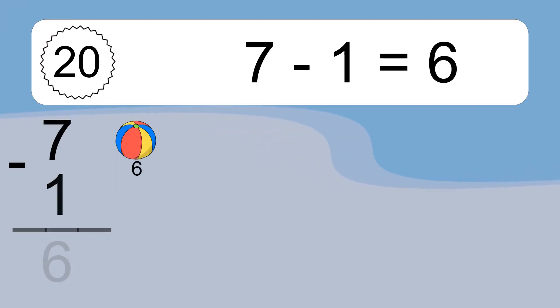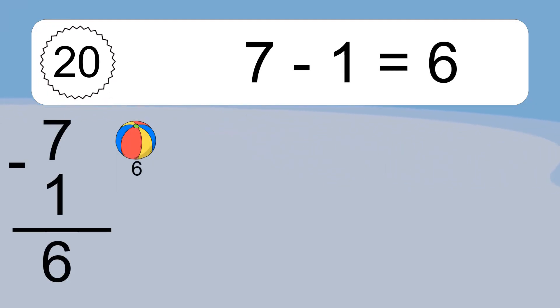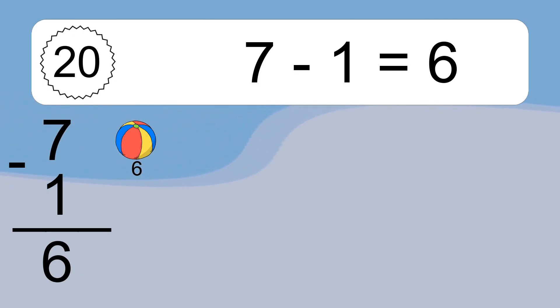7 minus 1 equals what? 7 minus 1 equals 6. Let's count it: 6.